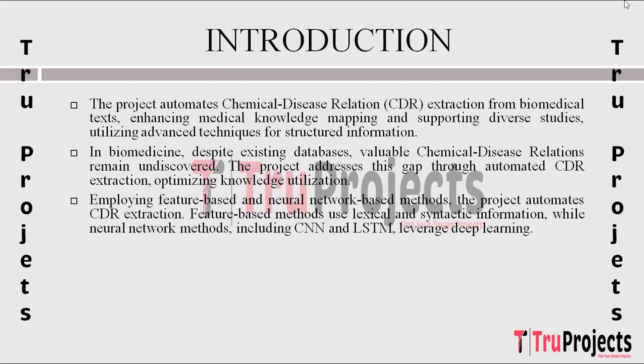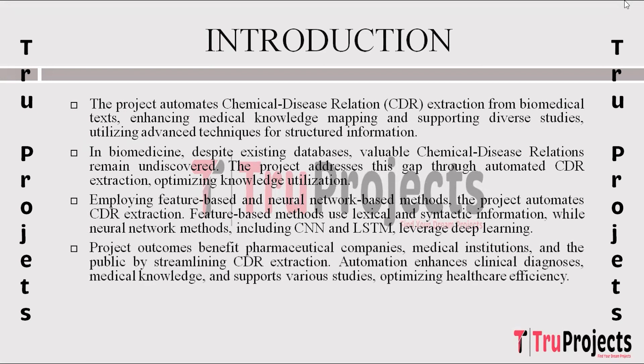The project employs both feature-based and neural network-based methods for CDR extraction. Feature-based methods involve extracting lexical and syntactic information to construct feature vectors, while neural network-based methods including CNNs and LSTMs automate feature extraction through deep learning. Additionally, attention mechanisms and Graph Convolutional Networks (GCN) are explored for enhanced extraction.